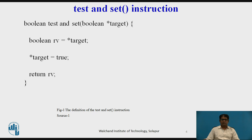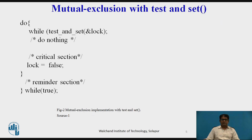Therefore, if two test-and-set instructions are executed simultaneously — each on a different CPU — they will be executed sequentially in some arbitrary order. If the machine supports the test-and-set instruction, we can implement mutual exclusion by declaring a boolean variable lock, which is initialized to false. The structure of process Pi is shown in this diagram.